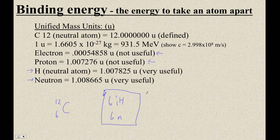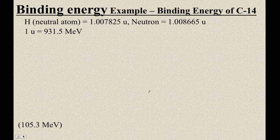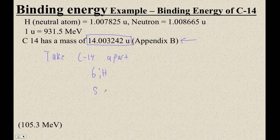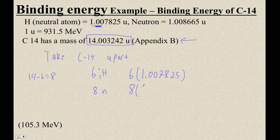Let me show you an example calculation. These really are not all that hard to do. Let's find the binding energy of carbon-14. Step one: look up the mass of the neutral atom. Those are in appendix B of your book, or you can look online. Then take carbon-14 apart. Carbon-14 has six protons, so we're going to take it apart into six hydrogen atoms. And it has eight neutrons, because 14 minus 6 is 8. So we have six times 1.007825 (the neutral hydrogen mass), plus eight times 1.008665 (the neutron mass). Add that all up.